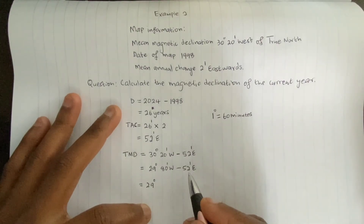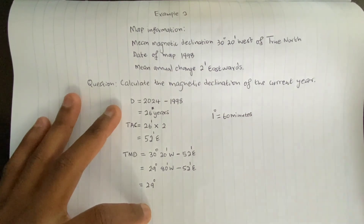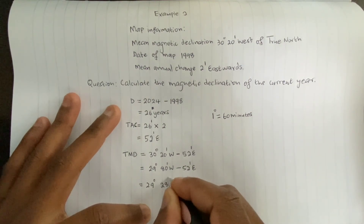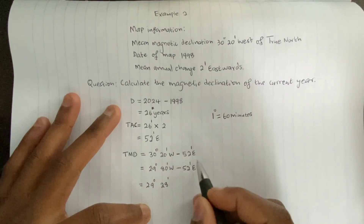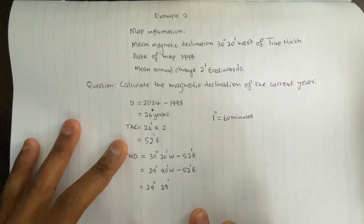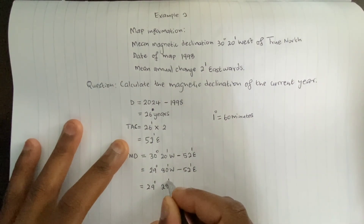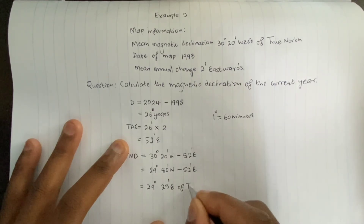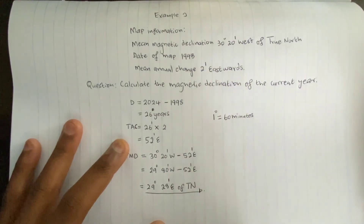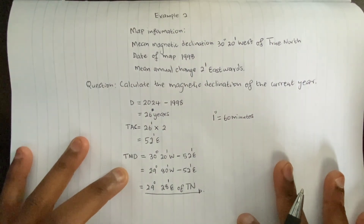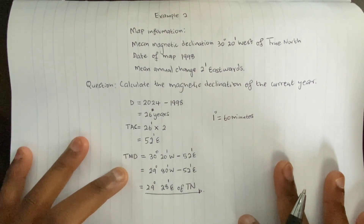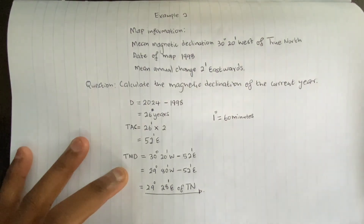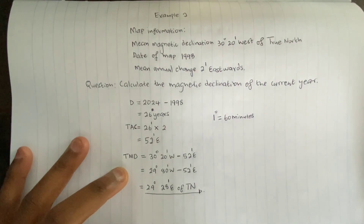We now have 29 degrees, and 80 minus 52 equals 28 minutes. We always take the direction of east, so the total magnetic declination is 29 degrees 28 minutes east of true north. That is how you calculate magnetic declination when your mean magnetic declination is west and your mean annual change is eastwards.